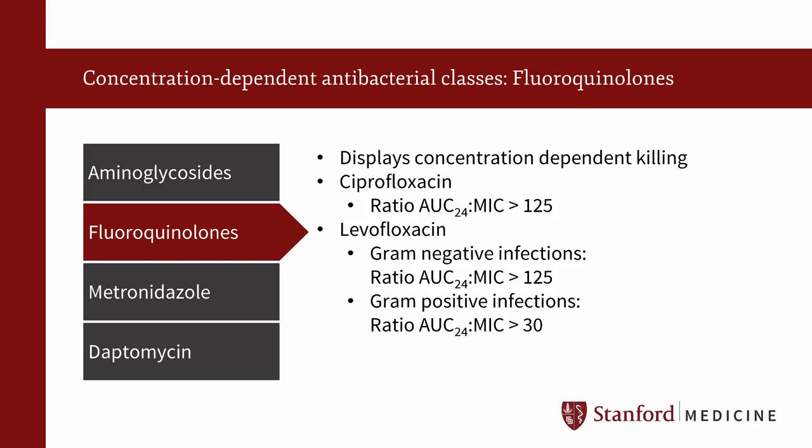Fluoroquinolones are another class of antibiotics that display concentration-dependent activity. The PK/PD parameter for fluoroquinolones is the 24-hour AUC to MIC ratio. An AUC to MIC ratio of greater than 125 correlates with optimal clinical and microbiologic outcomes in seriously ill patients infected with enteric gram-negative pathogens. The fluoroquinolone goal AUC to MIC ratio can vary depending on the target organism. For respiratory tract infections involving Streptococcus pneumoniae, the free drug 24-hour AUC to MIC ratio associated with high probability of bacterial eradication is around 30, which is significantly lower than the goal AUC to MIC involving gram-negative microorganisms.